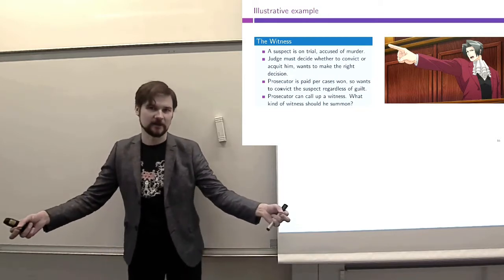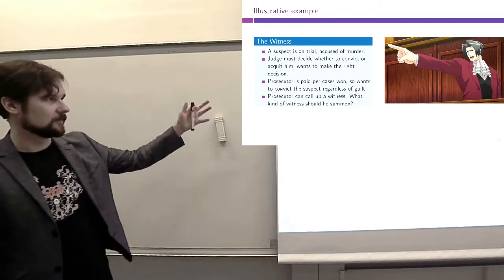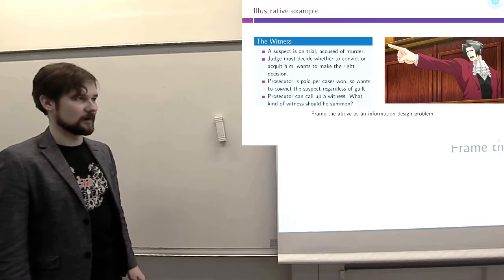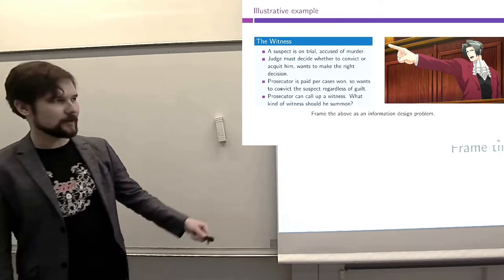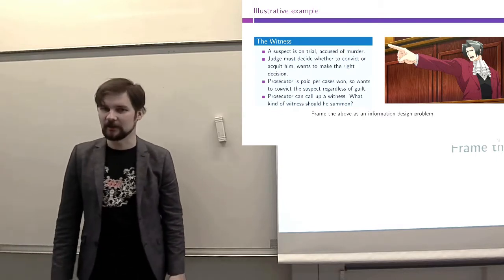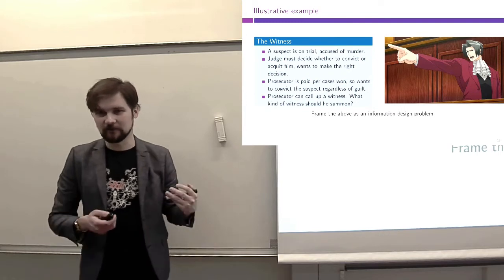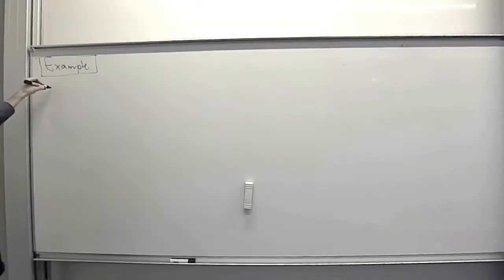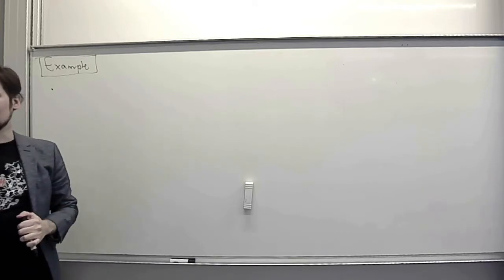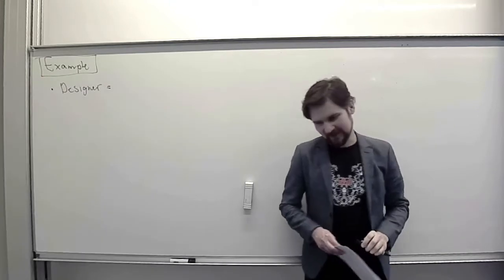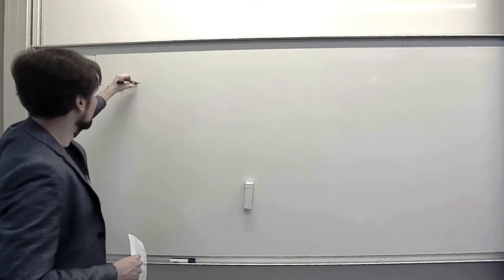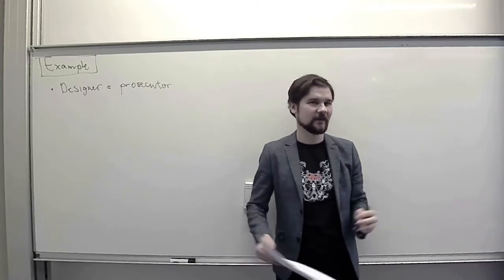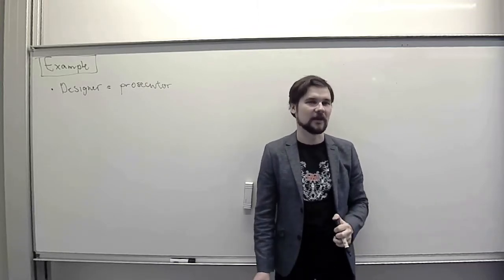This is the problem we're facing. I want you to think about it for maybe five minutes and frame this story into an information design problem — go back to the diagram and identify all the main elements. Question one: who is our designer? It's the prosecutor. The prosecutor designs what kind of witness to summon, so the prosecutor designs what kind of information the judge will get about the suspect's guilt.